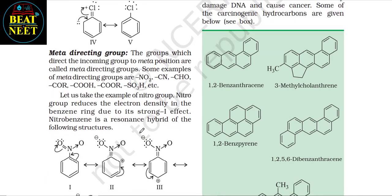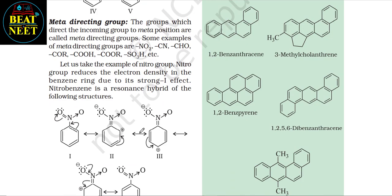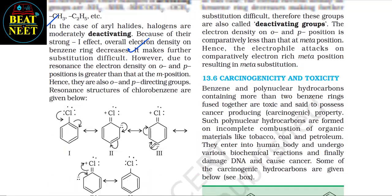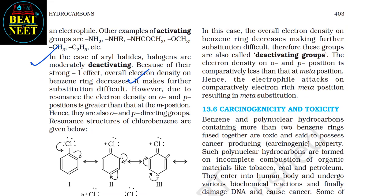Meta directing groups: the groups which direct the incoming group to the meta position are called meta directing groups. Examples include –NO₂, –CN, –CHO, –COR, –COOH, –COOR, –SO₃H, etc. For example, the nitro group reduces electron density in the benzene ring due to its strong –I effect. Nitrobenzene is a resonance hybrid in which the overall electron density on the benzene ring decreases, making further substitution difficult; these groups are also called deactivating groups. The electron density at ortho and para positions is comparatively less than at meta position, so the electrophile attacks the comparatively electron-rich meta position, resulting in meta substitution.